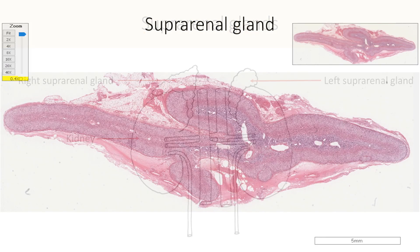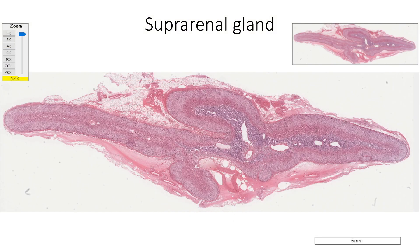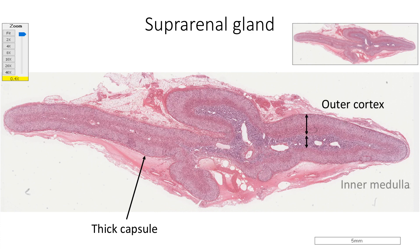This is a section of suprarenal gland under low power magnification. The gland is covered by a thick capsule. It has an outer cortex and an inner medulla. The cortex develops from mesoderm and secretes steroid hormones, while the medulla develops from neural crest and secretes catecholamine hormones.